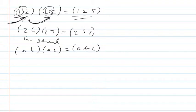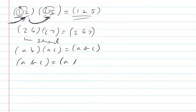It also works in the other direction — it's kind of like factoring. You can take something of the form (A, B, C) and write it as (A, B)(A, C).